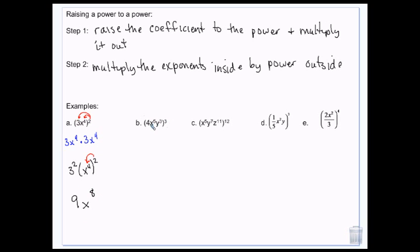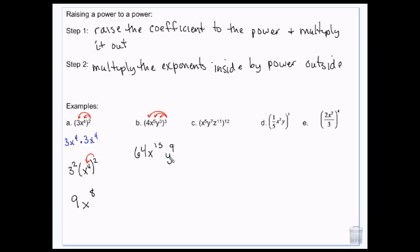If I do 4x to the 5th, y to the 3rd, and I raise that to the 3rd, I'm going to raise each of these. 4 to the 3rd is 4 times 4 times 4 — that's 4 times 4, which is 16, times 4, which is 64. 5 times 3 is 15. 3 times 3 is 9.